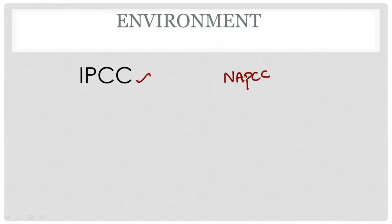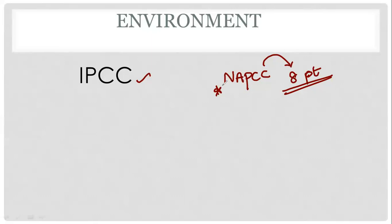Coming to environment. We have discussed repeated environment questions. From NAPCC questions — NAPCC is the National Action Plan on Climate Change. India is about climate change. One action plan has 8 points and goals involved. Which NAPCC goal is asked? That means it is easy to select. I am stressing you to read on NAPCC today, covering the exam across three days.